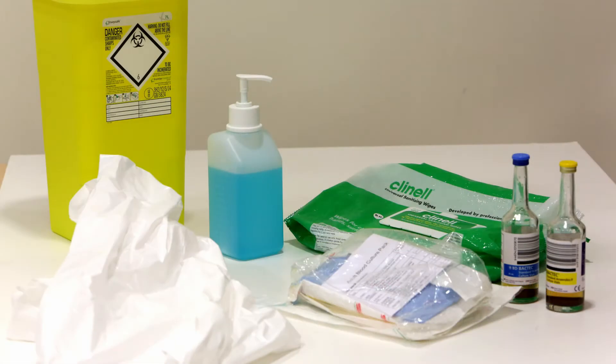The equipment you will need in order to take a set of blood cultures includes an adult blood culture pack, an apron, and a sharps box.